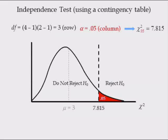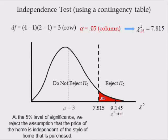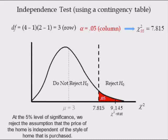The probability of being greater than the critical value is 0.05, the significance level shown in red. The probability of being less than this critical value is 0.95, the white area under the distribution. The critical value defines the do-not-reject and reject regions. The chi-square stat of 9.145 is in the reject region because it is larger than the critical value of 7.815. Thus, at the 5% level of significance, we reject the assumption that the price of the home is independent of the style of home that is purchased.